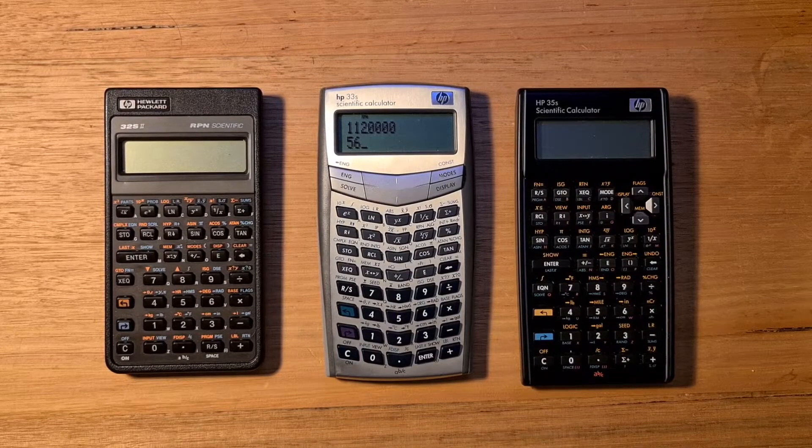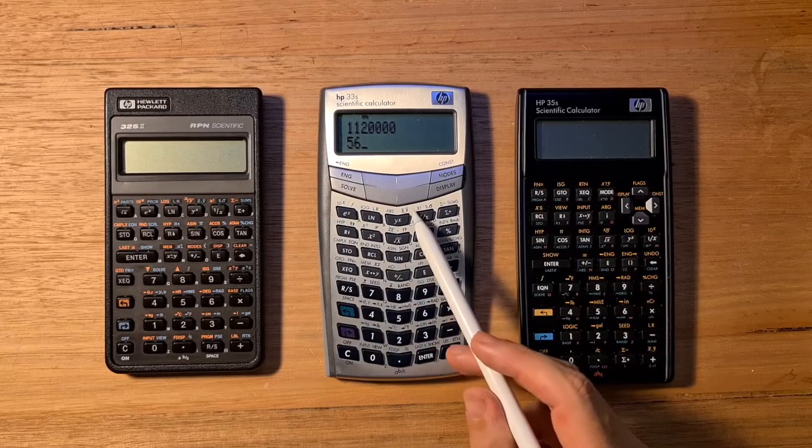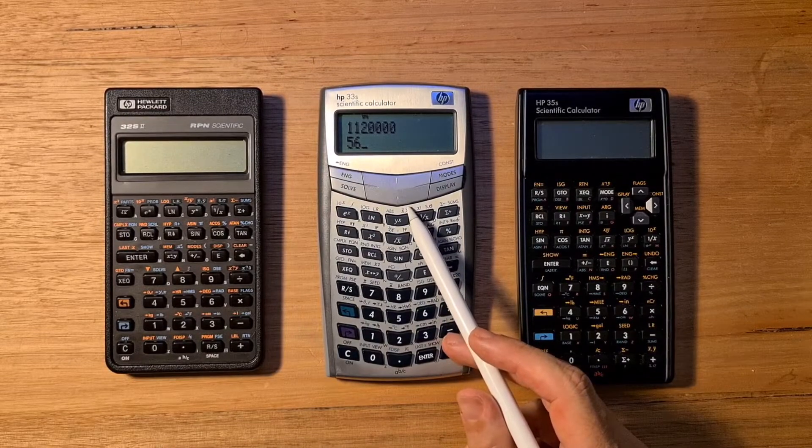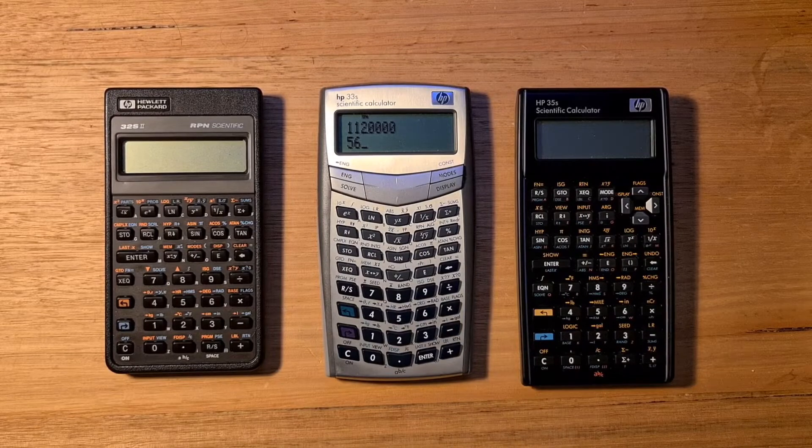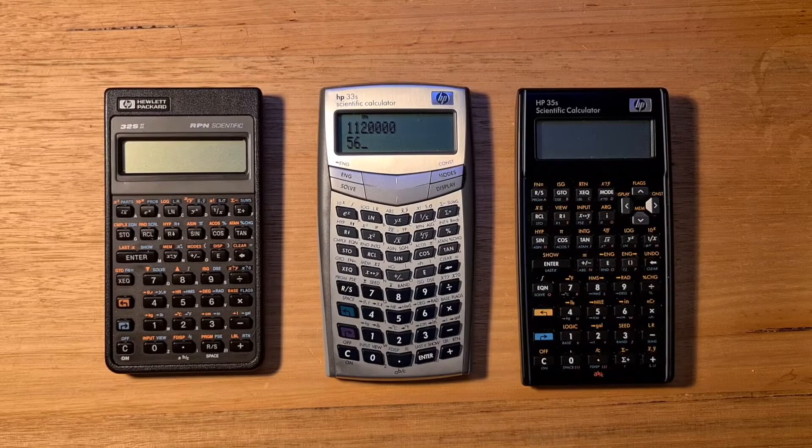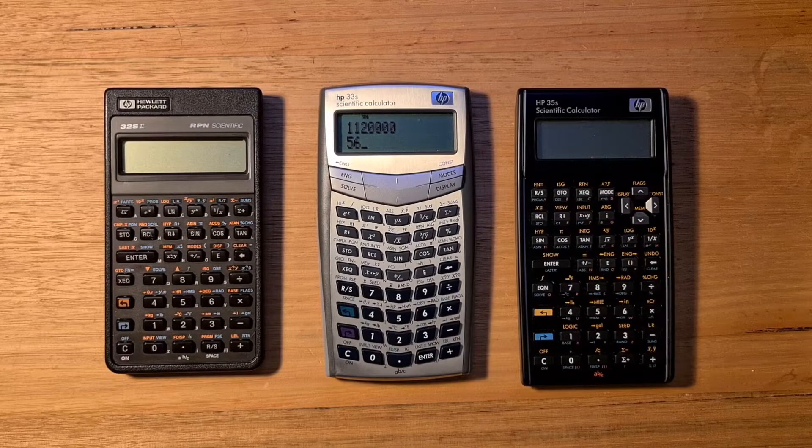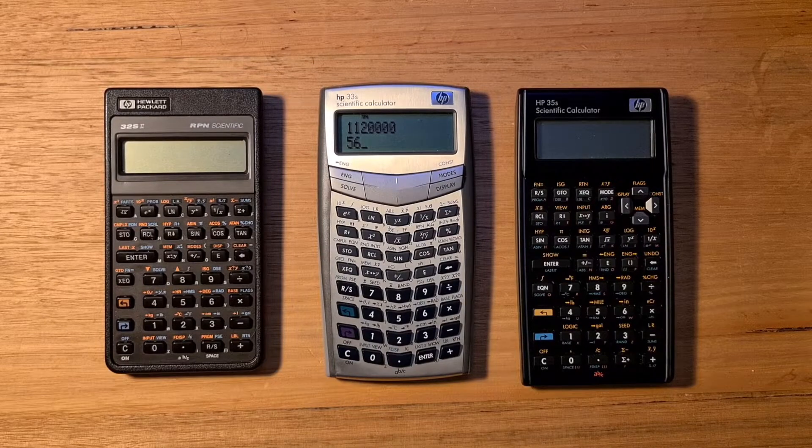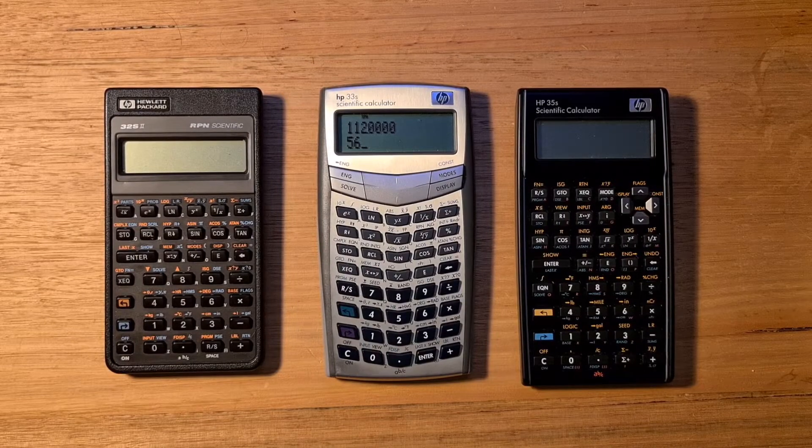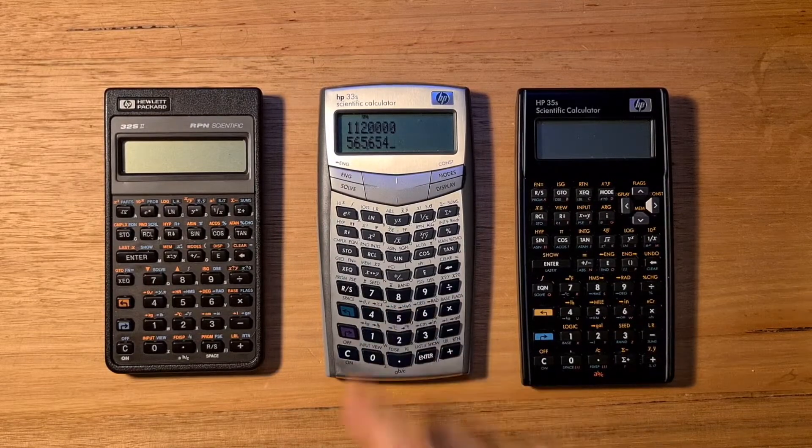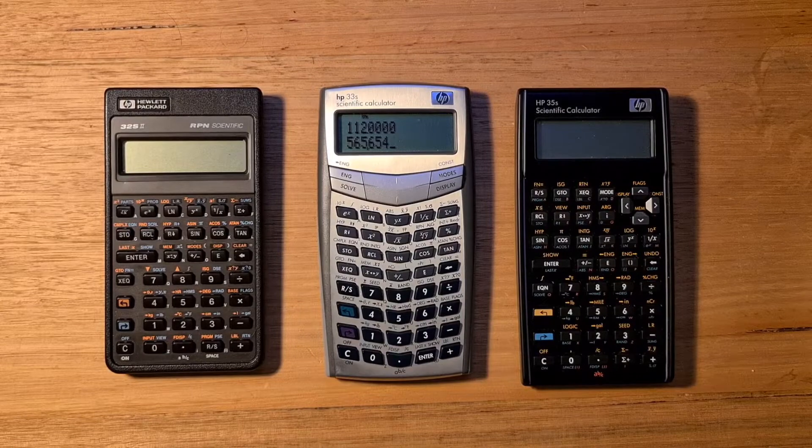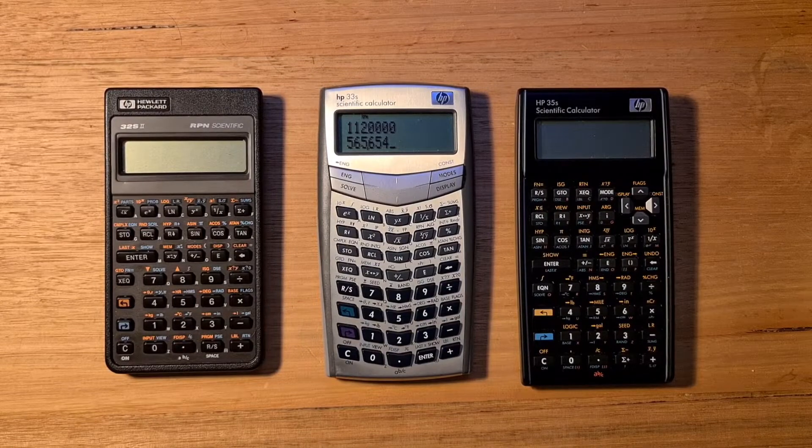The 33S also introduced a 4-direction cursor key. This was really awkward to use, partly due to its placement, but also its 4-way rocker style action. In general though, the key action on the 33S is really good, not dissimilar from the Pioneer, with a rigid and satisfying tactile key action.